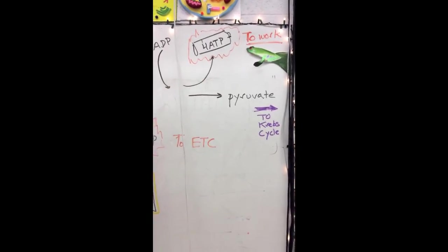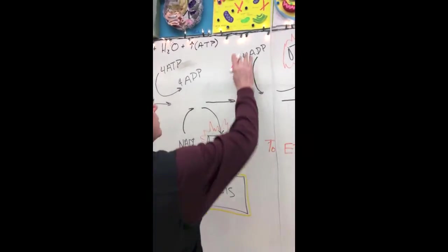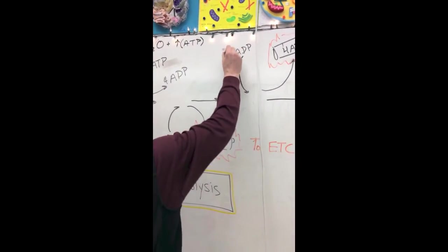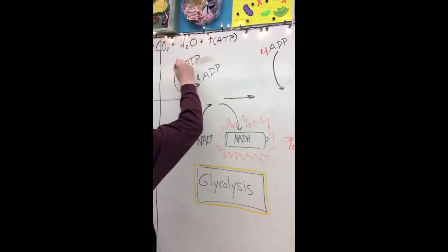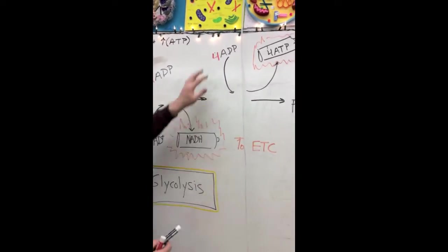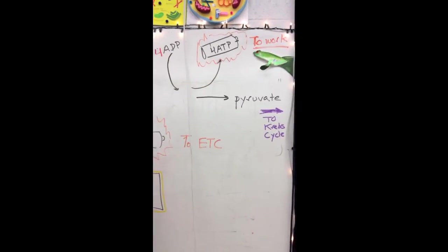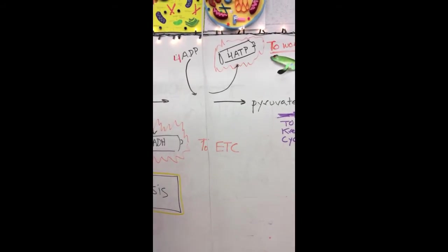The net gain, since we used, this is incorrect, this should be four ATP. We're actually using two here to split, make that correction now, and we generate four here, so our actual net gain is two molecules of ATP.